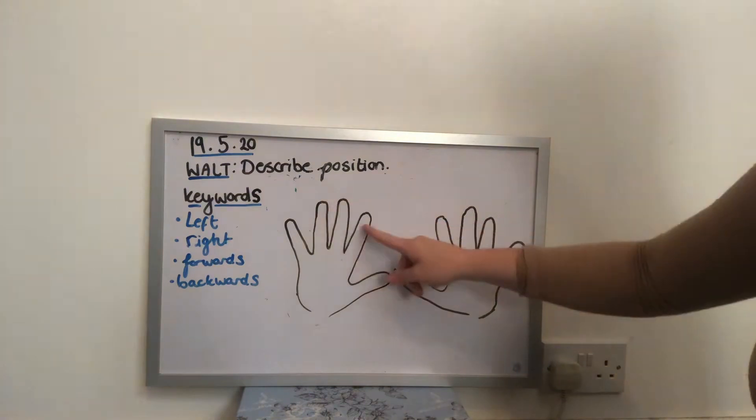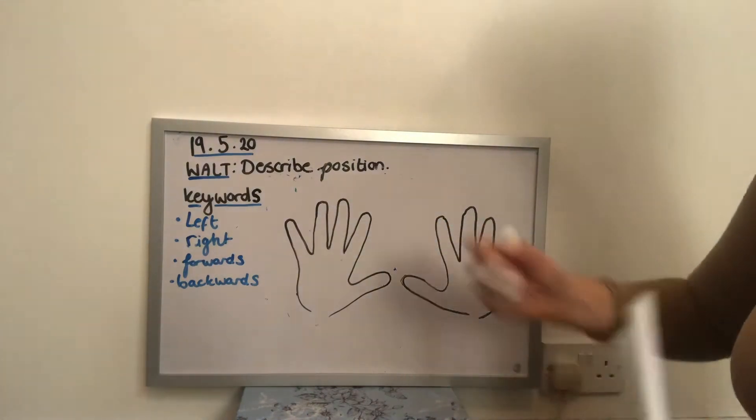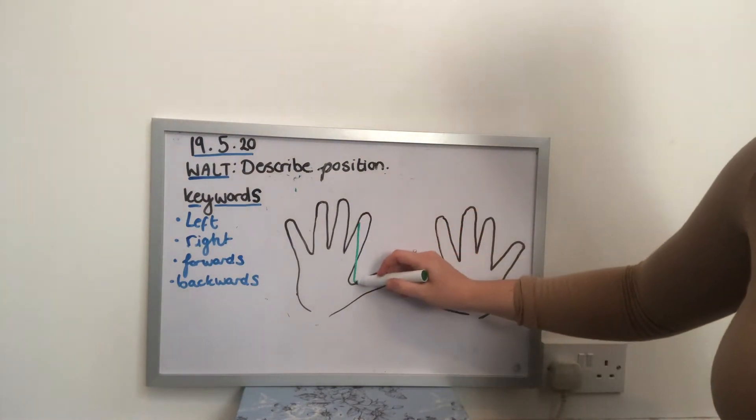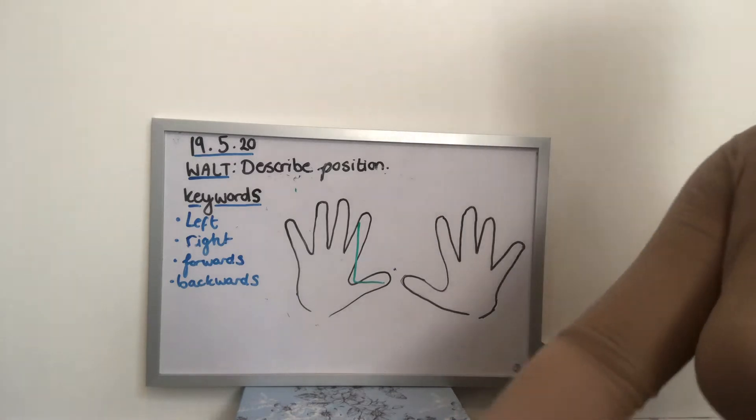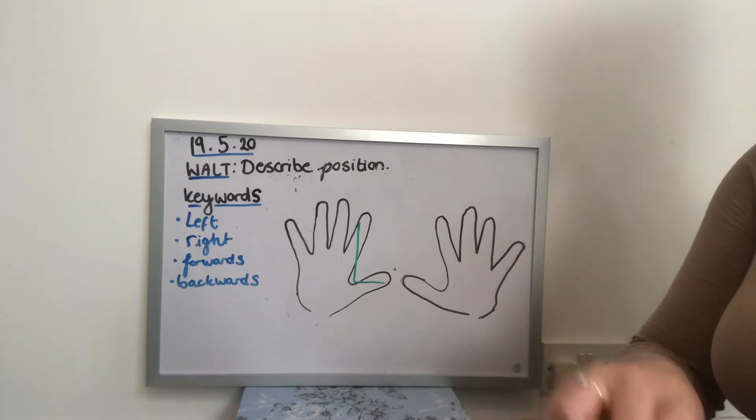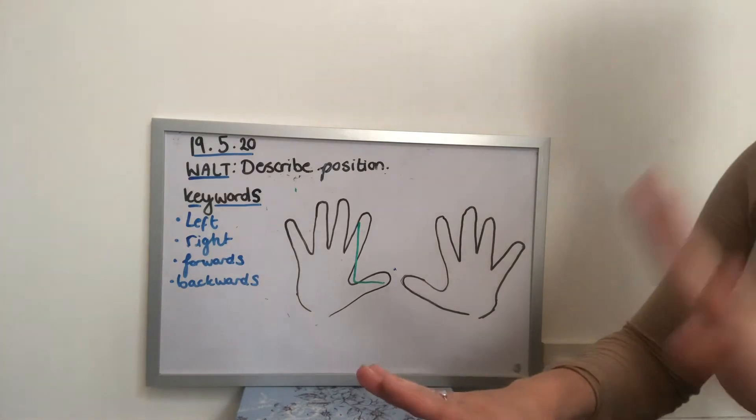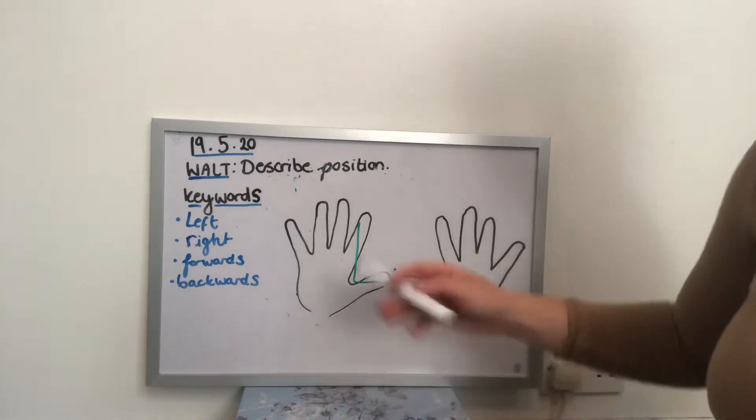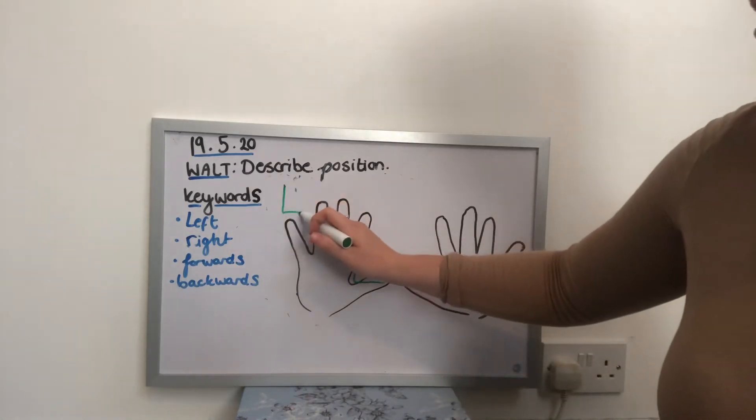As you can see here, there is an L shape made. So if you put your hands in front of you, you should be able to see, with the palms facing down, you should be able to see an L that's facing towards you. So that L makes for the left hand.